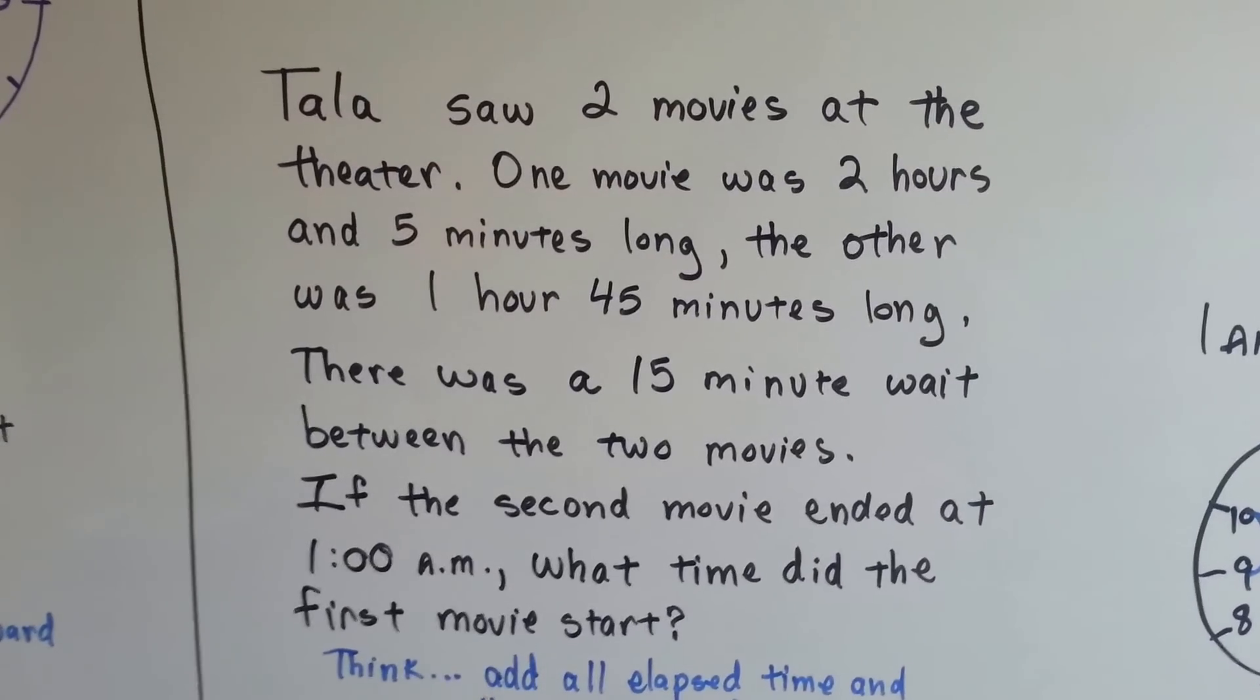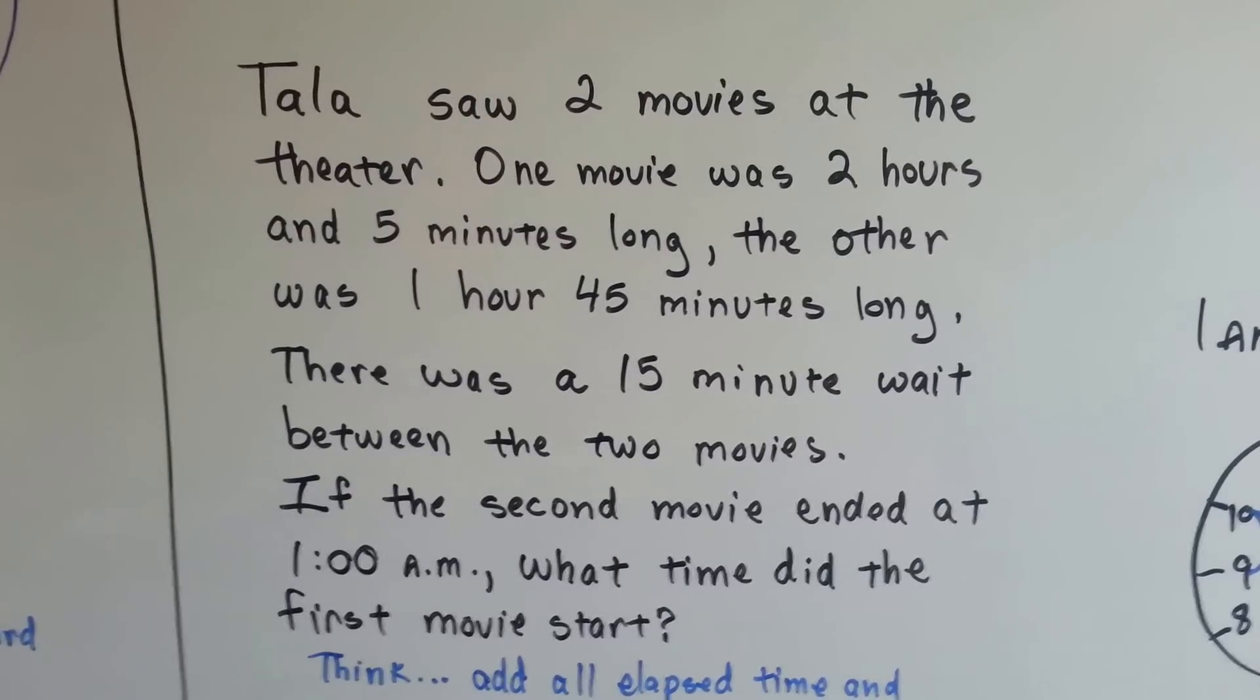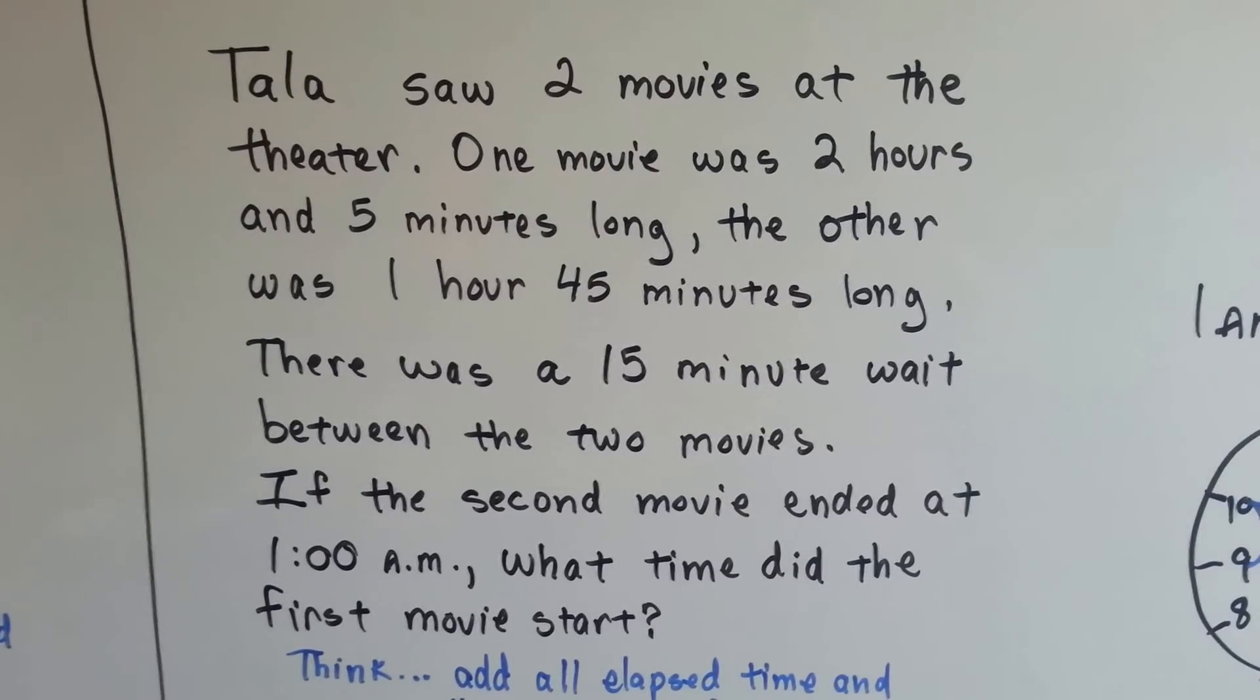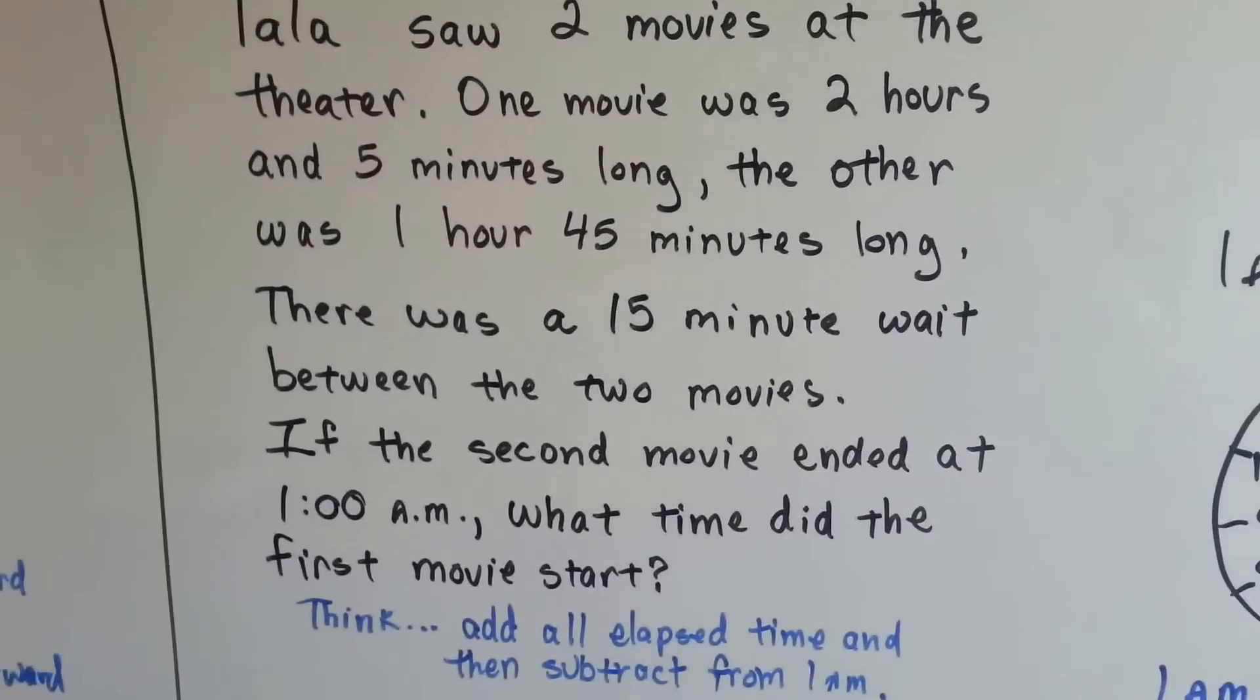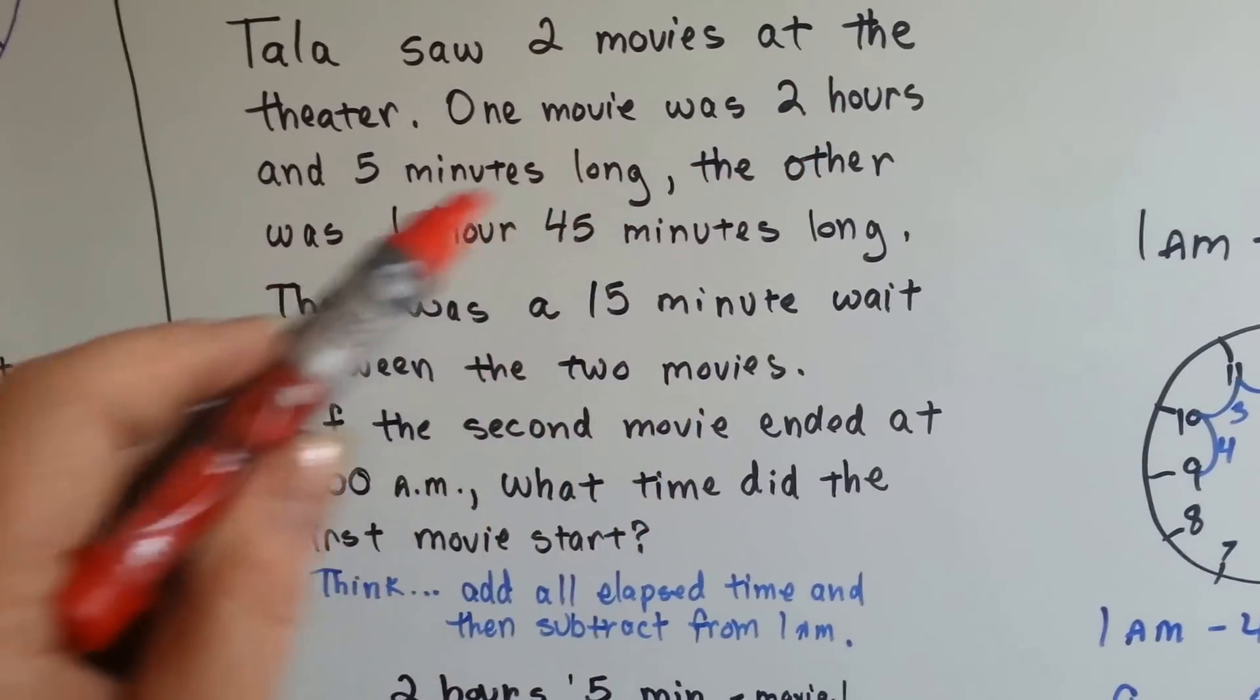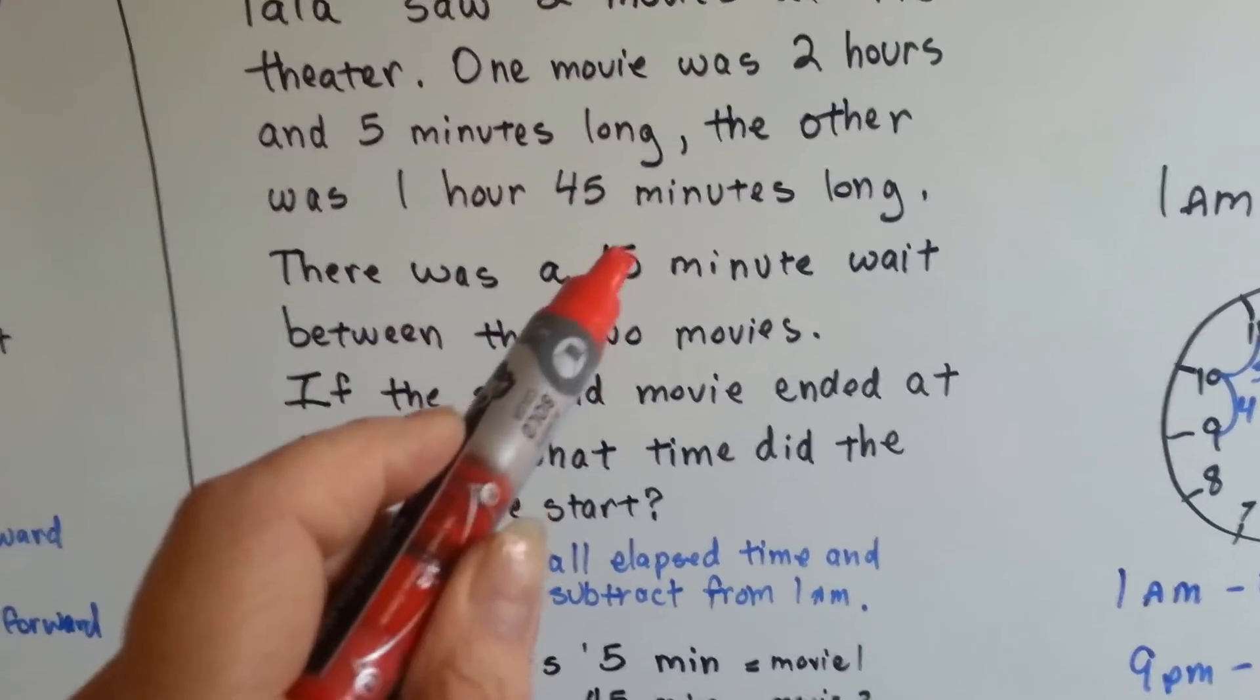All right, here's a tougher one. Tala saw two movies at the theater. One movie was two hours and five minutes long. The other was one hour and 45 minutes long. There was a 15 minute wait between the two movies. If the second movie ended at 1 a.m., what time did the first movie start? So we think. We need to add up all the elapsed time and then subtract it from 1 a.m.